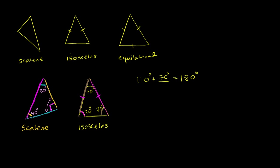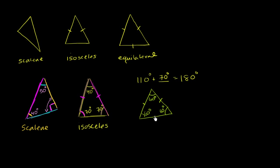Now let's do a third example. If this angle is 60 degrees and this angle is 60 degrees, what type of triangle is this? Well, if this is 60 and this is 60, to make them add up to 180, this third angle would also have to be 60 degrees. If all of the angles are congruent, then all of the sides are congruent, and so you are dealing with an equilateral triangle. As we said before, this is also a subset of isosceles since you have at least two sides congruent, but here it's all three — so this is an equilateral triangle.